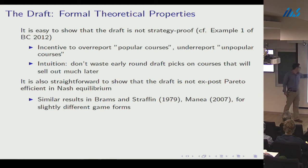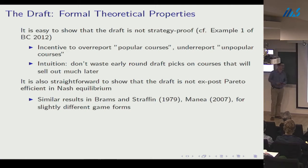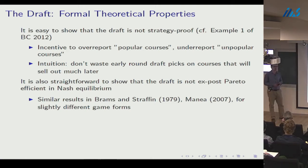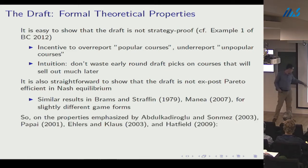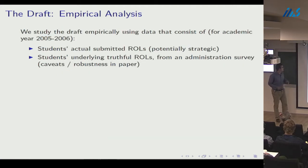It's also straightforward to show that the draft doesn't yield an ex post Pareto efficient allocation in Nash equilibrium — partly for bundle-preference reasons, but even with responsive preferences you can construct examples where the resulting allocation is not ex post Pareto efficient. So on the properties emphasized by the extant literature, the dictatorship looks more attractive: it's strategy-proof and ex post Pareto efficient, while the draft is neither.